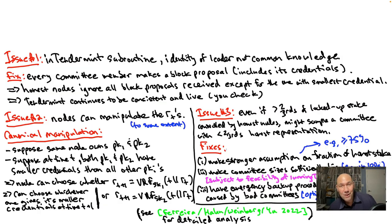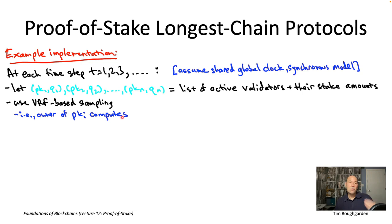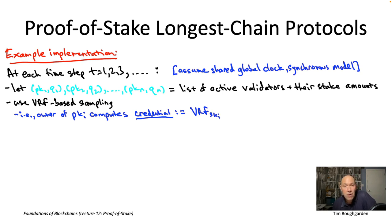So the high-level idea is to use proof-of-stake random sampling to, in a Sybil-resistant way, pick a leader of each round, and then just run permissioned longest chain as in lecture eight. As we know from the part-two videos, there's more than one way to do proof-of-stake random sampling. Let's take the same approach we took with BFT-type protocols: the VRF-based approach. This means each owner of a public key is responsible for evaluating a VRF — a verifiable random function — using the private key corresponding to the public key visible in the staking contract. This VRF output I'll call the credential.